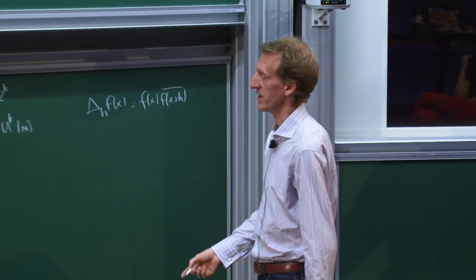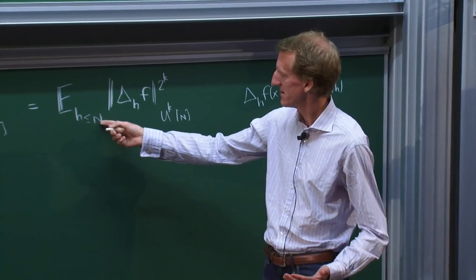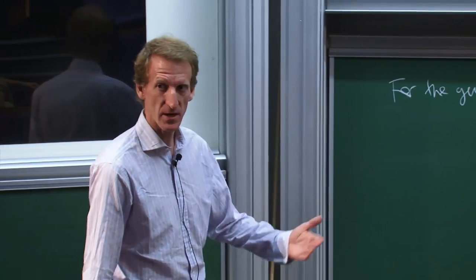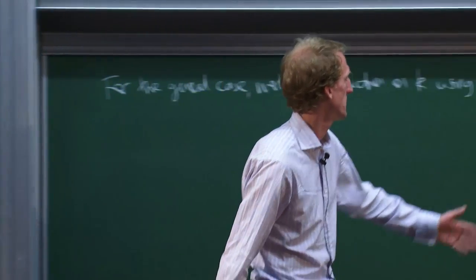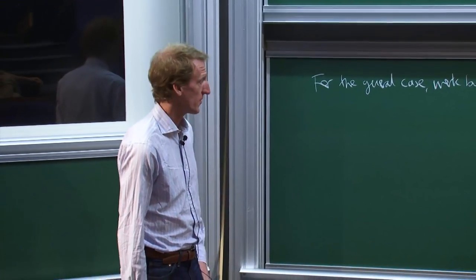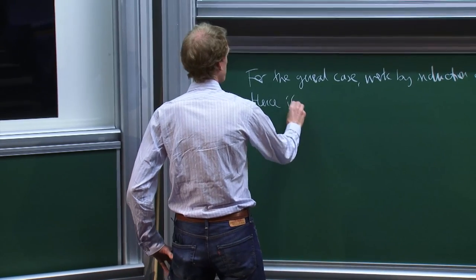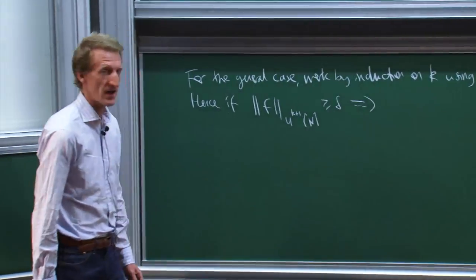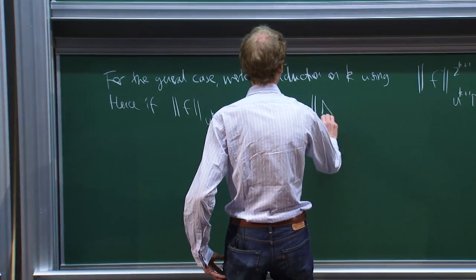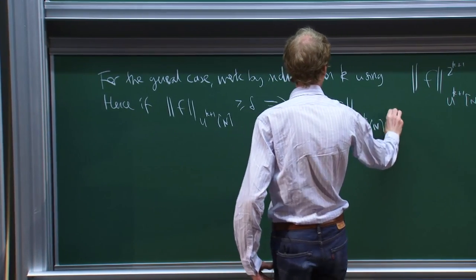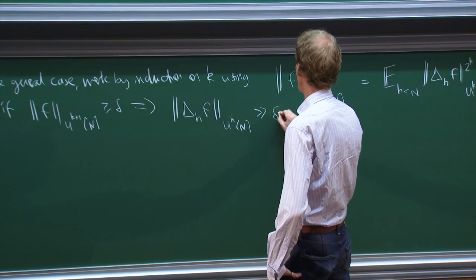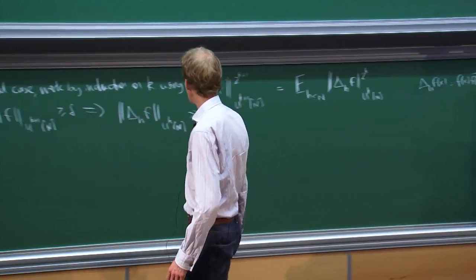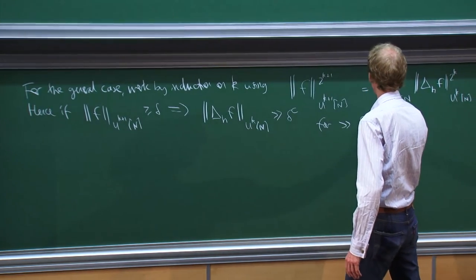There are slight technical inaccuracies in what I've written here, to do with the fact that the interval 1 up to n is not quite a group. But that statement would be literally true if I was working in the cyclic group in which I've embedded this interval. So if you have that fact, it follows fairly easily. Hence, if the Gowers U^{k+1} norm is at least delta, then that implies that many of the derivatives of f have a large U^k norm — bigger than delta to some constant, no worse than 2 to the k.